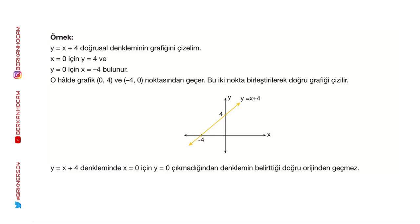y=x+4 doğrusal denkleminin grafiği: x=0 verince y=4, y=0 verince x=-4 buluyorum. Bu nokta orijinden geçmemekte. Noktaları işaretledikten sonra düz çizgi çiziyorum. Bu soru Hız Yayınları'nın spiralli defterinden.